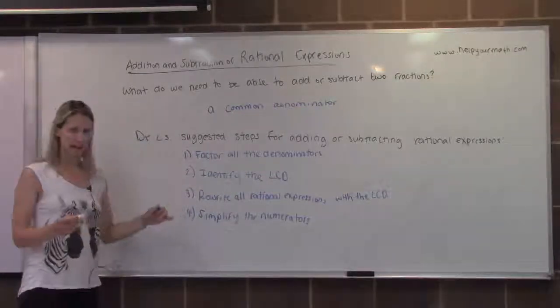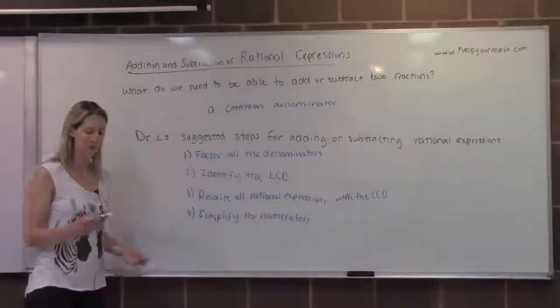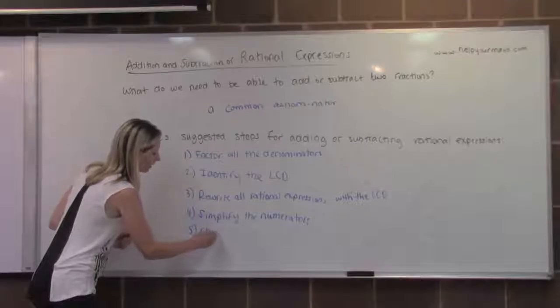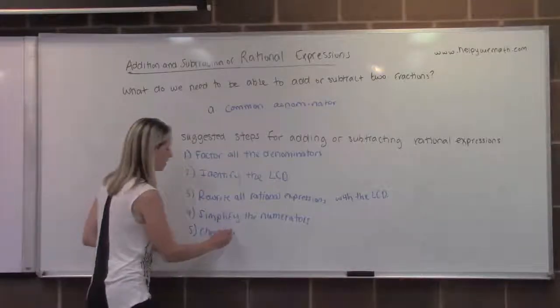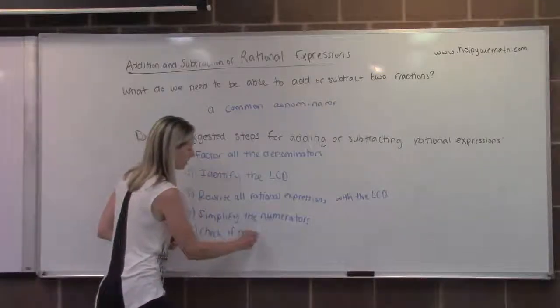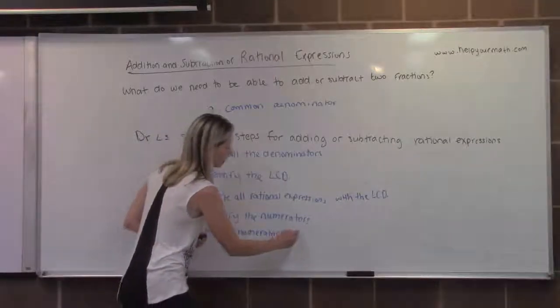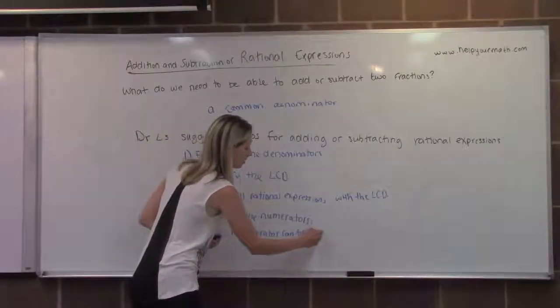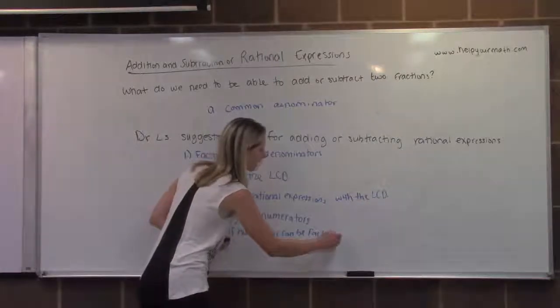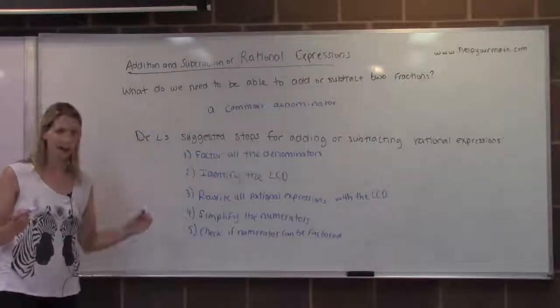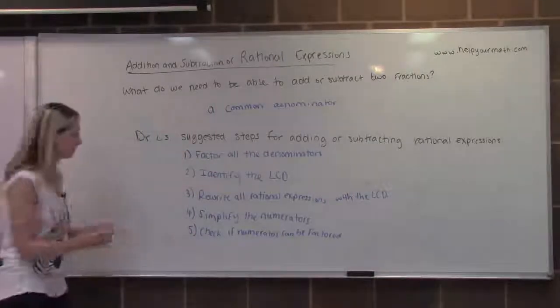Once it's simplified, check to see if the numerator can be factored. Because just like with fractions, if you add or subtract them, you want to make sure that it's in simplest form. We have to do the same thing here. So if it can be factored, factor it. Then look to see if you can simplify.